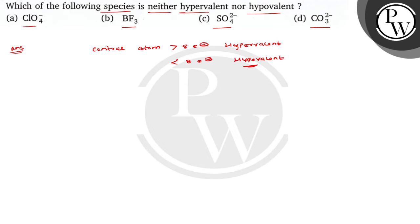In the case of perchlorate ion, the structure is Cl with double bond O, double bond O, double bond O, and O⁻. In this structure, the number of bond pairs around chlorine is 7, and therefore the number of electrons around it is 14 electrons. So this is hypervalent.